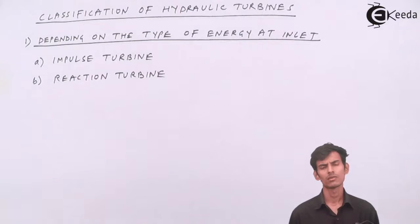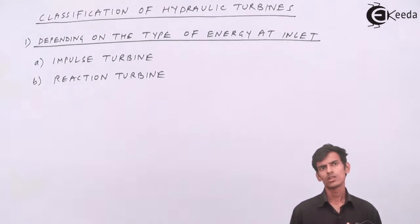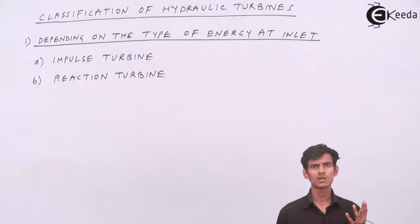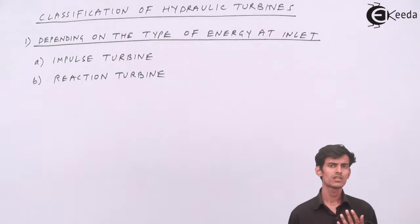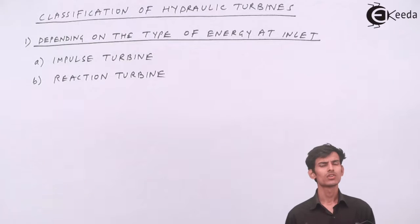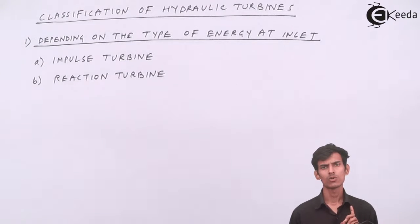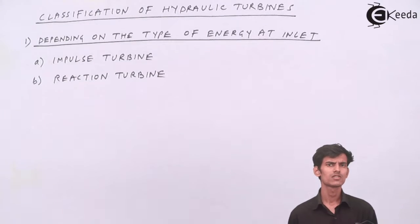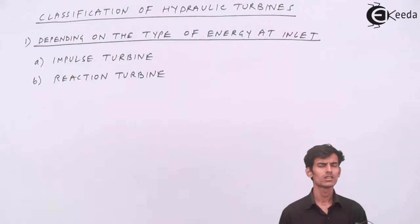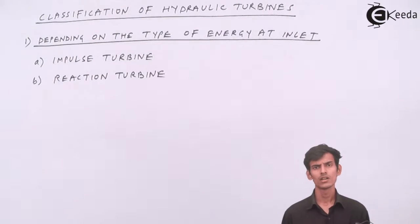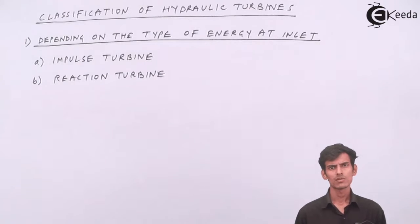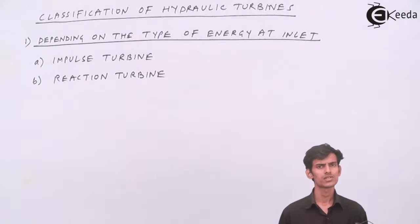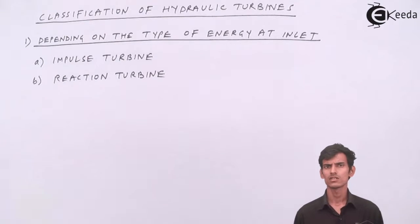Next is the reaction turbine. In the reaction turbine, the whole energy is not converted to kinetic energy in the nozzle — some part remains as pressure energy and some as kinetic energy. So the turbine which uses both pressure energy and kinetic energy to generate power is called a reaction turbine. We have three turbines to study: the Pelton wheel, the Francis turbine, and the Kaplan turbine. The Pelton wheel is an impulse turbine, whereas Francis and Kaplan are reaction turbines.